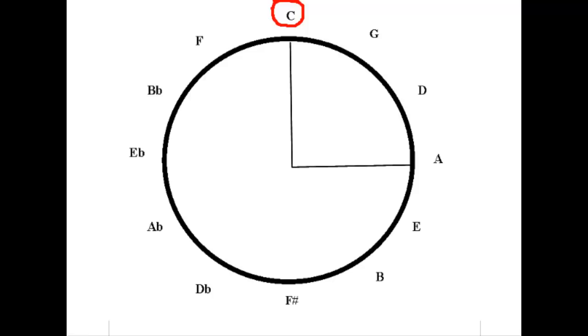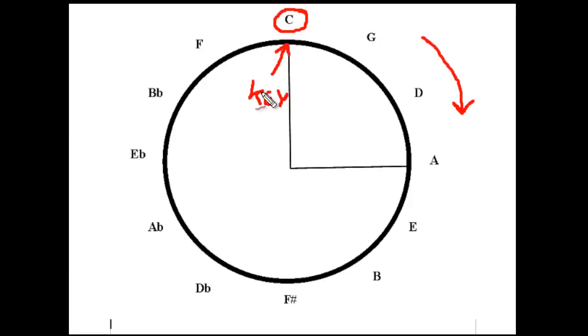So how you work out the relative minor is if you're moving in a clockwise direction, the relative minor is at 90 degrees to your key chord. And in this case, we're working in the key of C, then we move around in a clockwise direction.